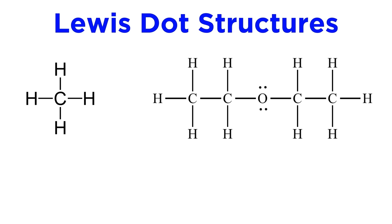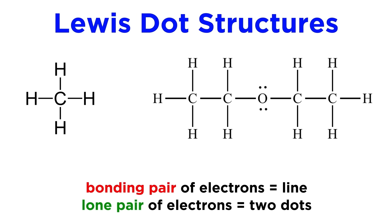Here are a few more examples of covalent compounds represented as Lewis dot structures. Notice that each pair of electrons in a covalent bond is expressed as a line, while lone pairs remain individual dots. Now let's go over some guidelines.